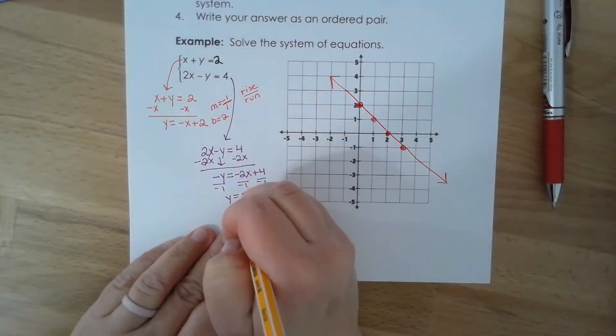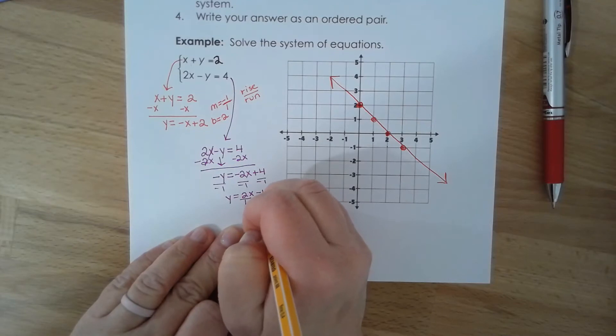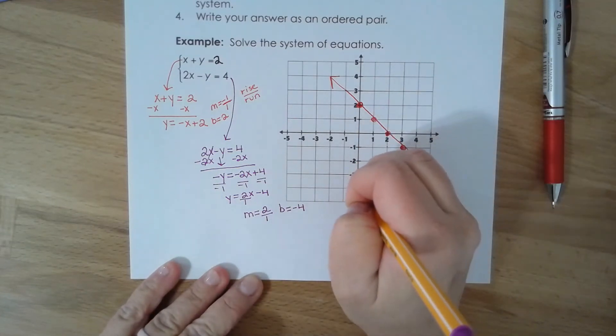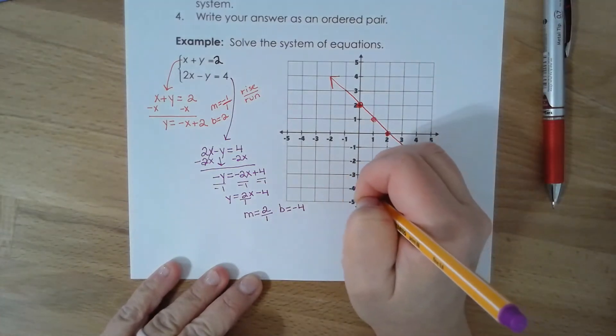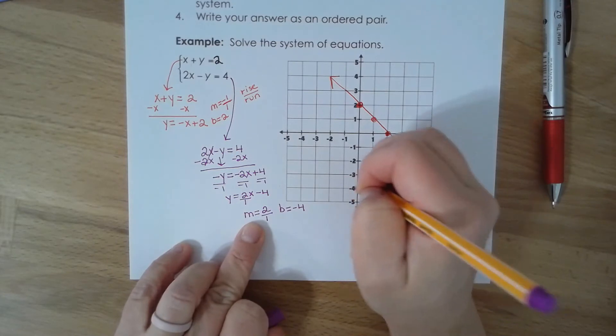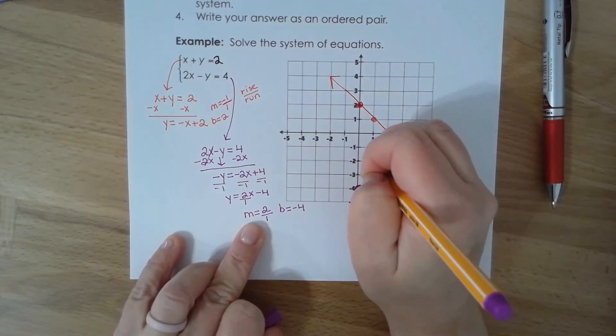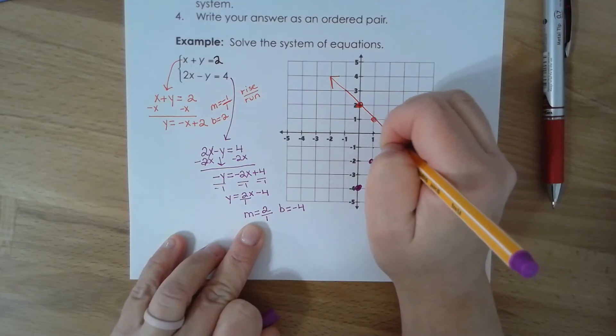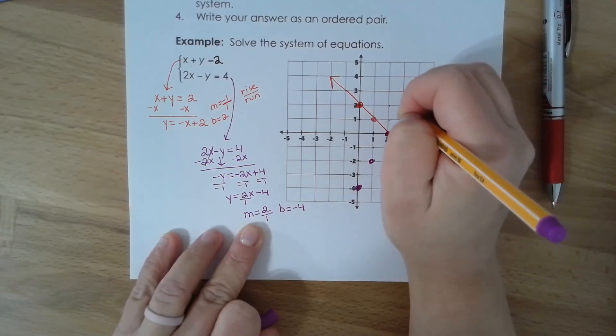So remember, my slope should always be a fraction. So in this case it's positive two over one and b is negative four. So I'm going to plot my b first at negative four. If my slope is positive two, I'm going up two, right one, rise two, right one, rise two, right one.